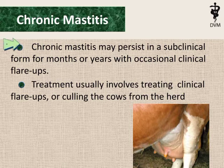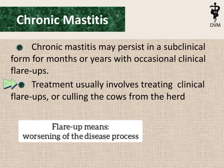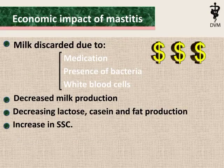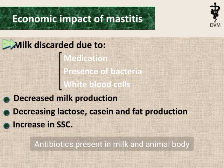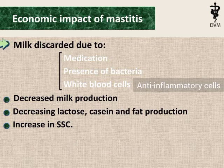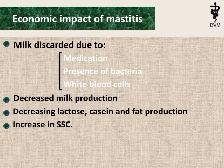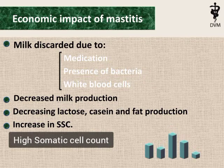Chronic mastitis may persist in a subclinical form for months or years with occasional clinical flare-ups. Treatment usually involves treating clinical flare-ups or culling the cows from the herd. Economically, mastitis causes milk to be discarded due to medication, presence of bacteria, and white blood cells. It decreases milk production, lactose, casein, and fat production, and causes an increase in somatic cell count (SCC).